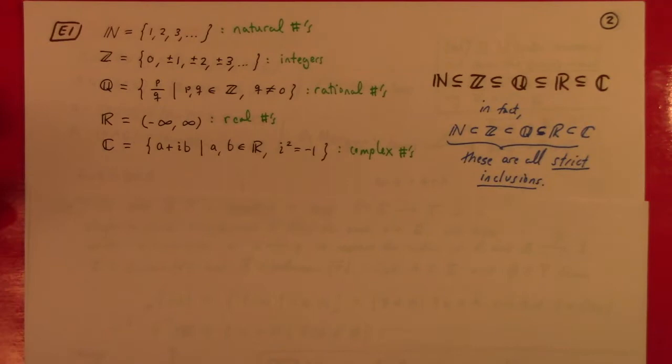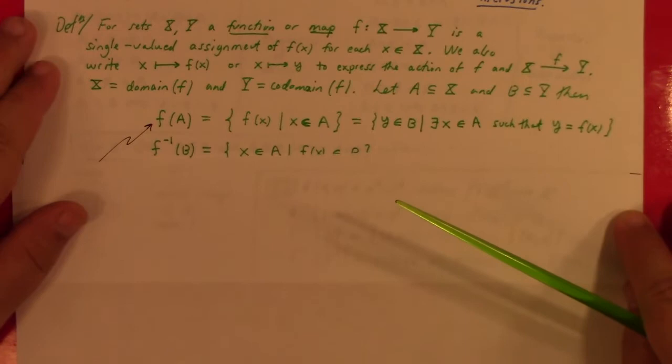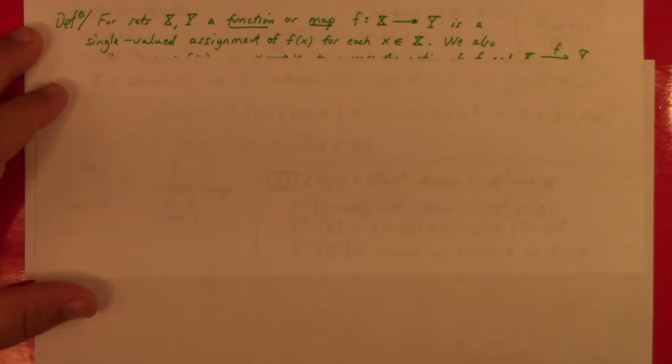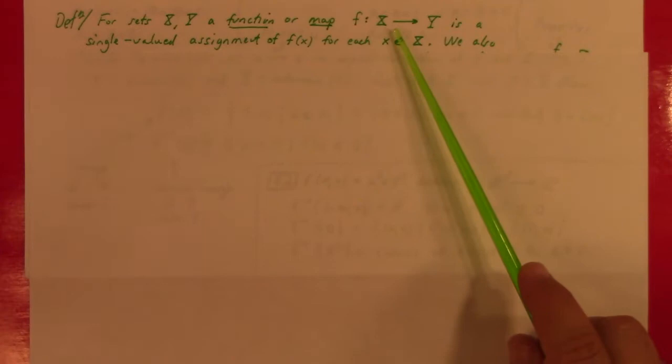Definition. For sets X and Y, a function or a map — we use the words map, mapping, and function pretty much interchangeably in this course. Sometimes people say a map is a continuous function, but for this lecture and through at least lecture four, function and map are used interchangeably.